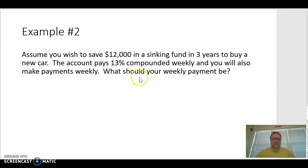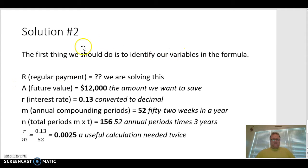So let's look at an example. So assume you wish to save $12,000 in a sinking fund in three years to buy a new car. The account pays 13% compounded weekly. Nothing really pays weekly. I just kind of wanted to show you a little something different just to show you how the periods kind of match up with our payments. And you will also make payments weekly. Remember, in order to use the annuity formula, our payments need to be at the end of each compounding period. And since our compounding periods are weekly, our payments need to be at the end of each week. What should your weekly payment be?